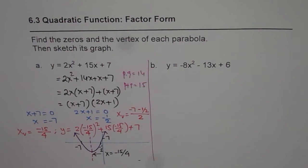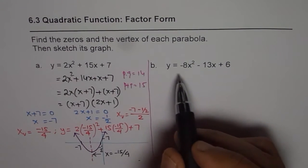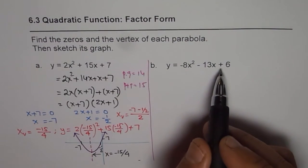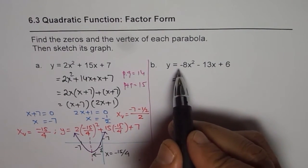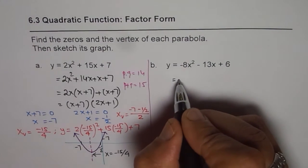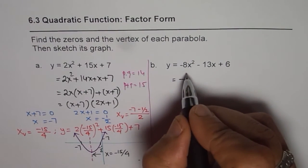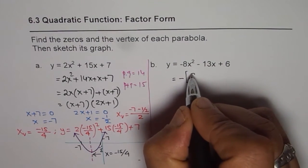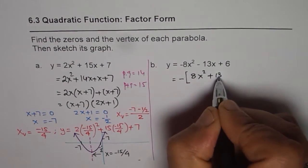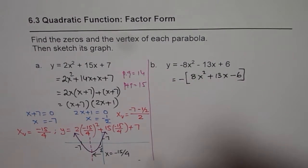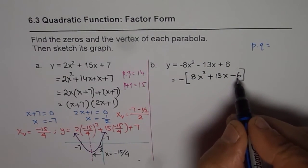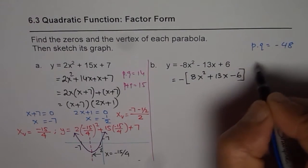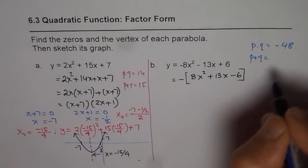The next question is y equals negative 8x squared minus 13x plus 6. I prefer to factor out the minus first, then do the factoring, so I rewrite this as negative times (8x squared plus 13x minus 6). Now we look for two numbers whose product is -6 times 8, which is -48, and whose sum is positive 13.